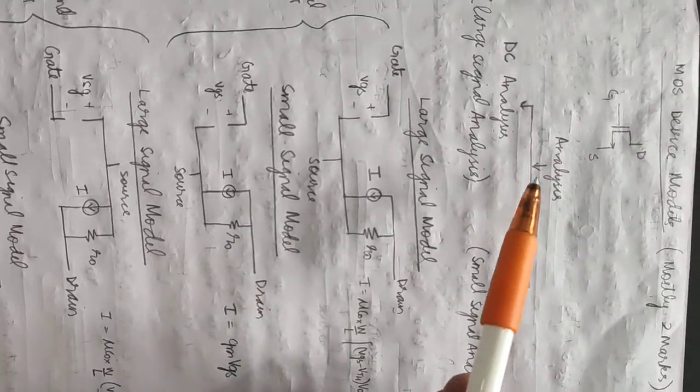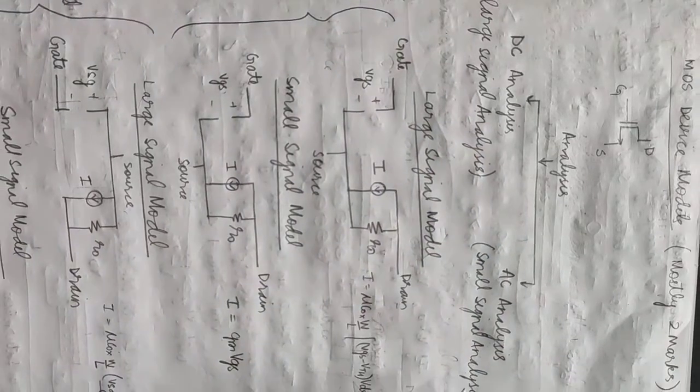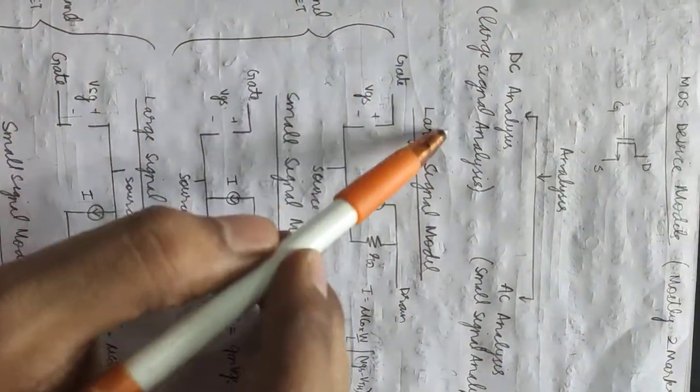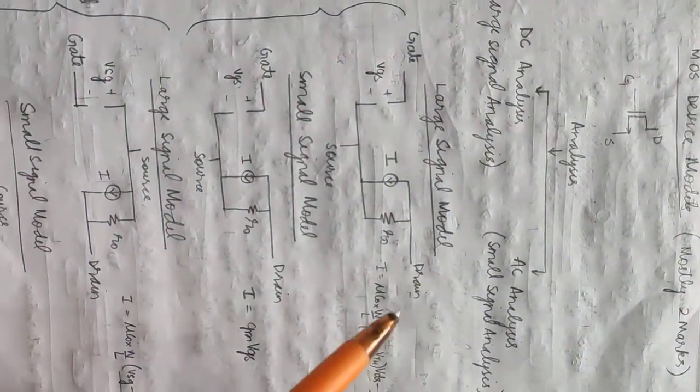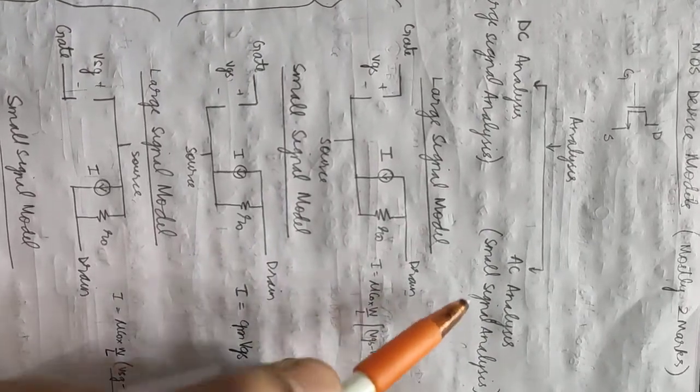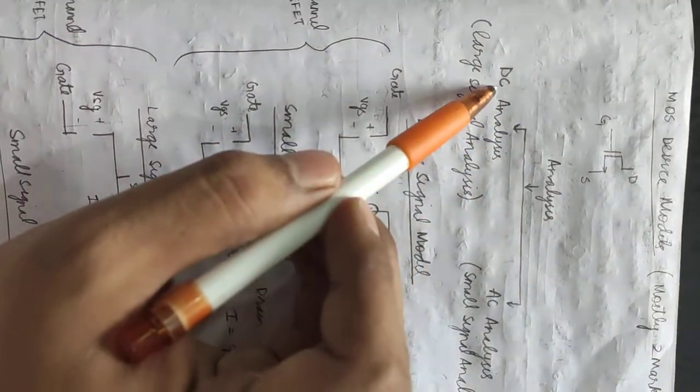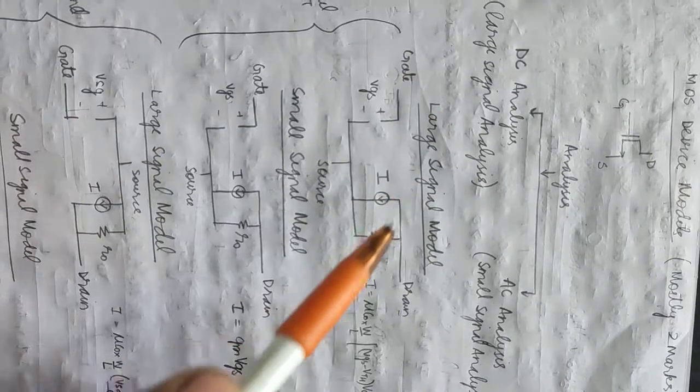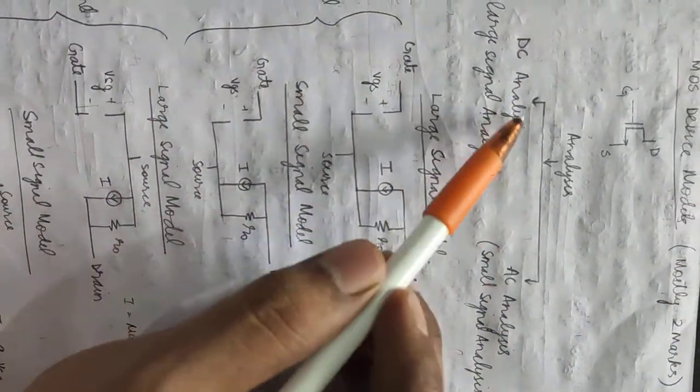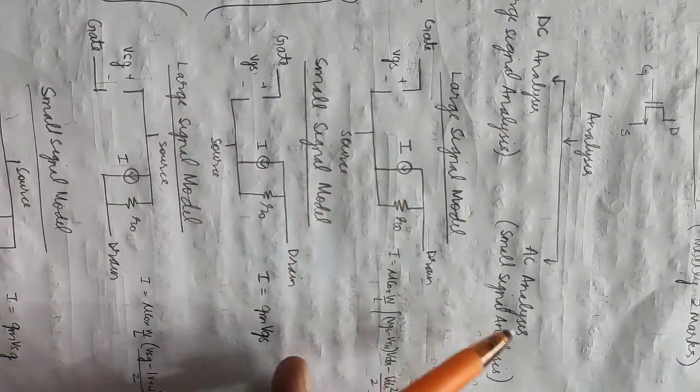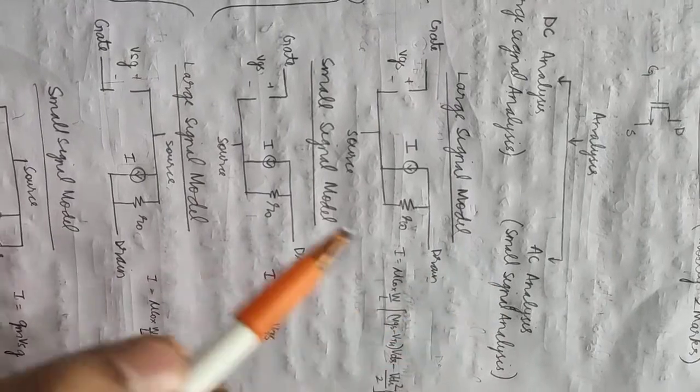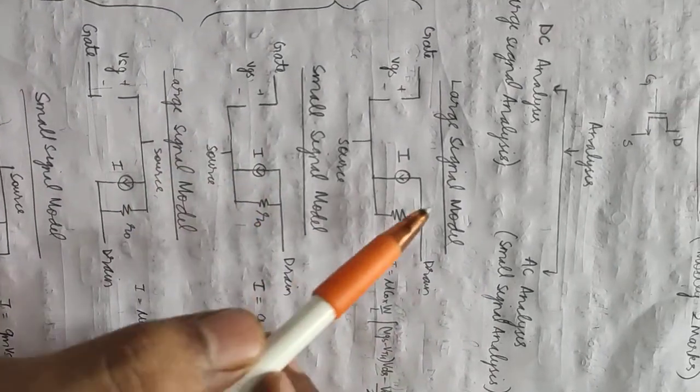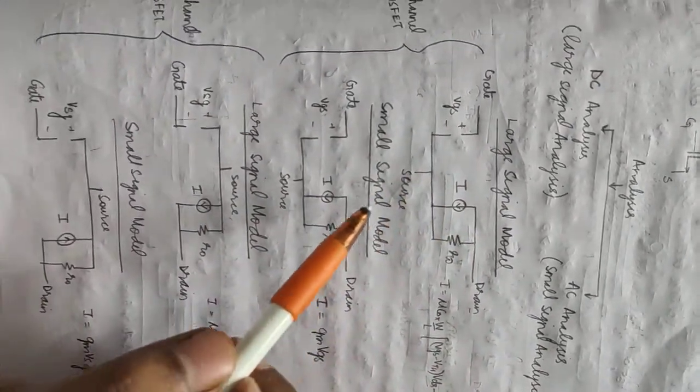Basically there are two types of analysis: DC analysis and AC analysis. These are the other names - the AC analysis is also called small signal analysis, DC analysis is also called large signal analysis. For DC analysis this is the model used, and for AC analysis or small signal analysis this is the model used. This model is known as the large signal model and this is the small signal model.